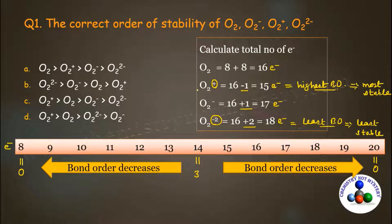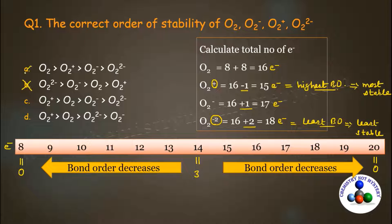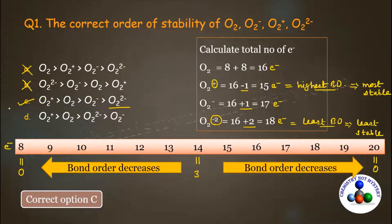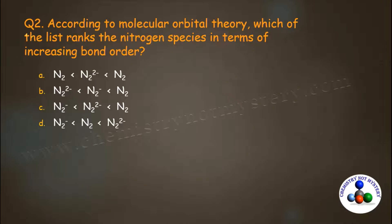Now match your answer with the given options. Find the option in which O2 positive ion is given in first place — that is option C and option D, so we can eliminate options A and B. Now find the option in which O2 2- is given on the least preference. That means option C will be the right option for this question.